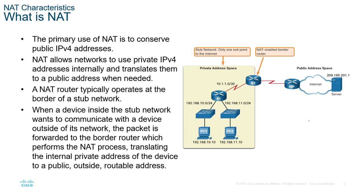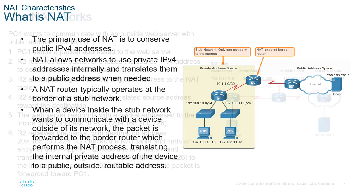NAT allows us to take a private address space and convert it to a publicly accessible resource, allowing it to gain access to the internet. Normally, NAT is done on a stub network — a network that contains itself, kind of more like an isolated network. There are no networks that connect through this private address space, and importantly, it masks all of the internal private IP addresses so they are allowed on the internet.